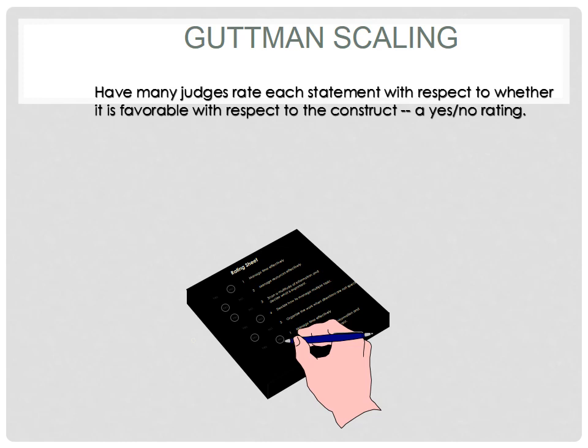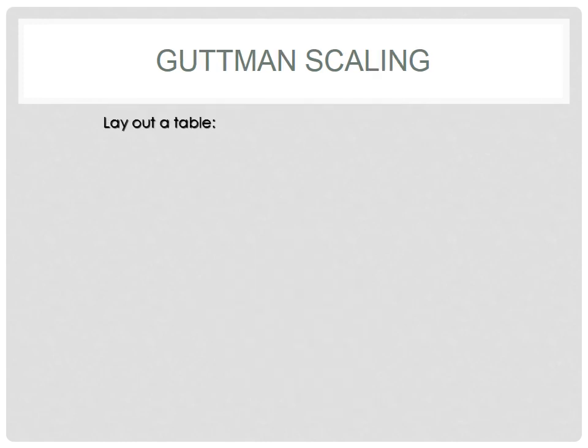These judges could be five people or it could be 100 people. Most importantly, remember that these are not individuals giving you responses — they're telling you the fit between the statements and the underlying construct. Once this is done, like we would do in any other scaling methodology such as Likert, we use a set of analytical procedures.